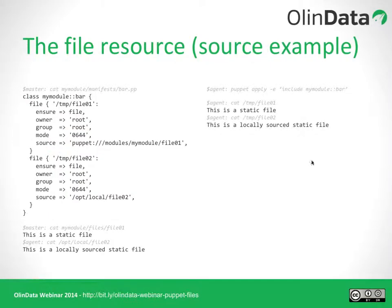Going back to the example, on the master we have a file called my_module/files/file_01 with the content 'this is a static file,' and on the agent we have /opt/local/file_02 saying 'this is a locally sourced static file.' On the right-hand side we do a puppet apply including the my_module::bar class. Once finished, we see on the agent there's /tmp/file_01 — the static file loaded from the master — and /tmp/file_02, the static file that came from the agent itself. So you can see the difference between what these two options do.